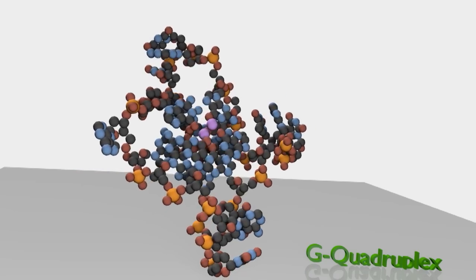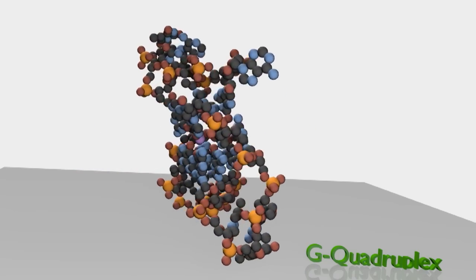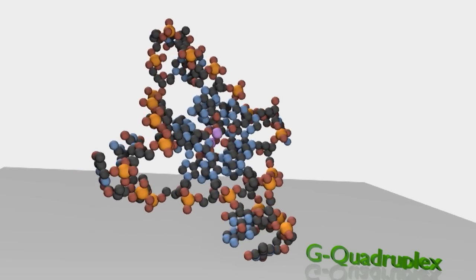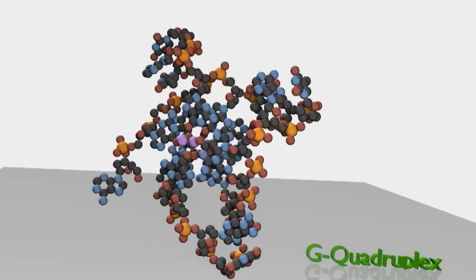Now, as it turns out, there are these really neat structures that form from telomeres called G-Quadruplexes. G-Quadruplexes are highly polymorphic and super stable, and they prevent both telomerase and ALT from lengthening the telomere.